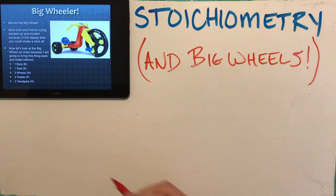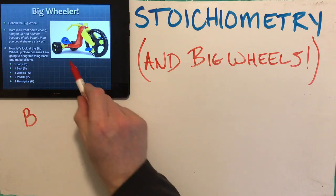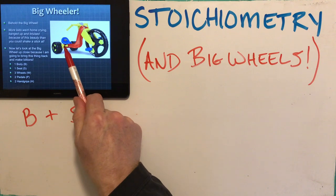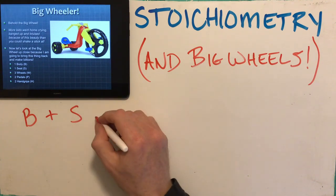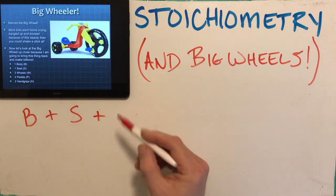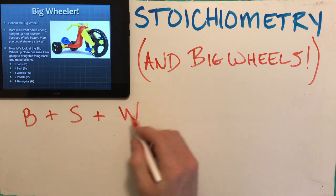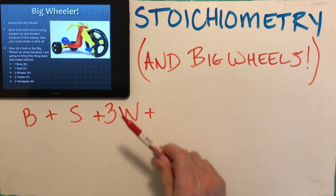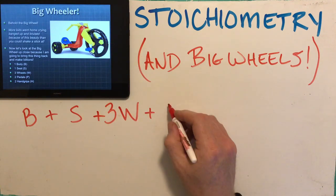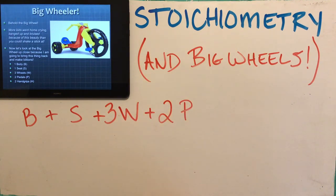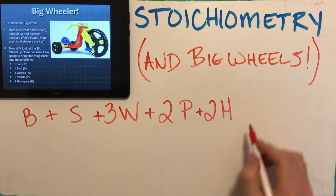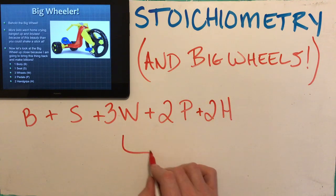So what do I need if I'm going to build big wheels? Well, I'm going to need a body (B) — that's the red part — and the forks. I also need one seat (S) — you can see the little blue seat here. I need three wheels (W) — two in the back and one in front. I also need two pedals (P) — one on each side of the front tire. And I need two hand grips (H) — you gotta get a good grip on this thing.